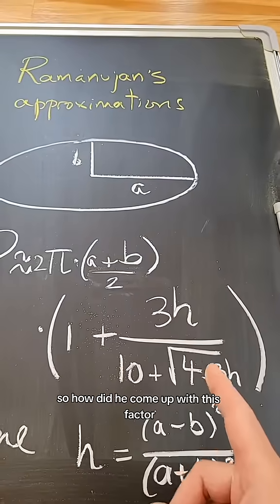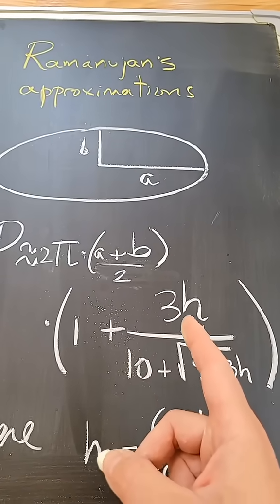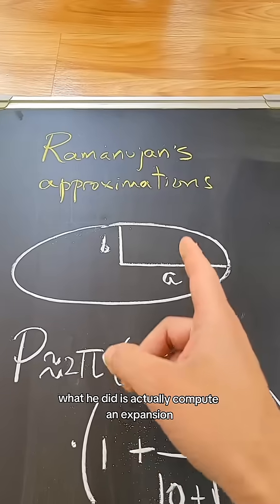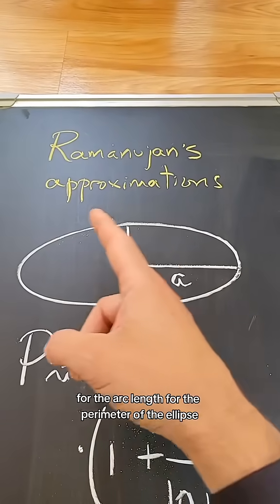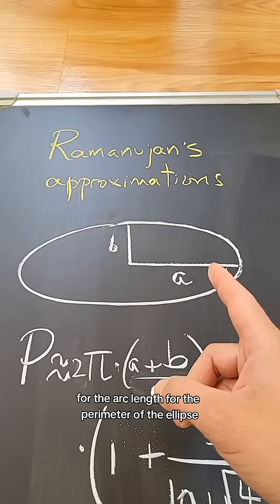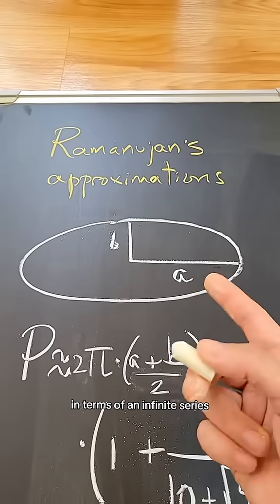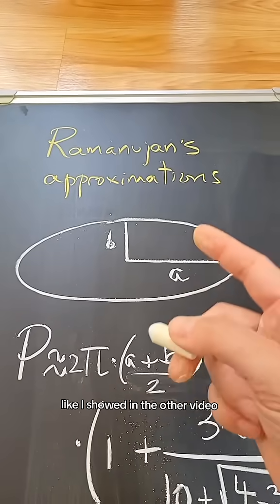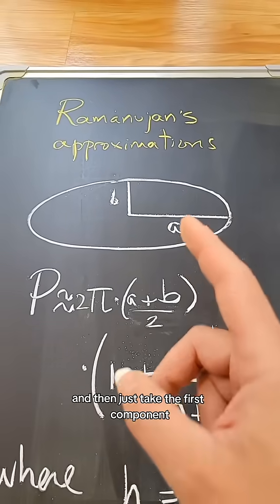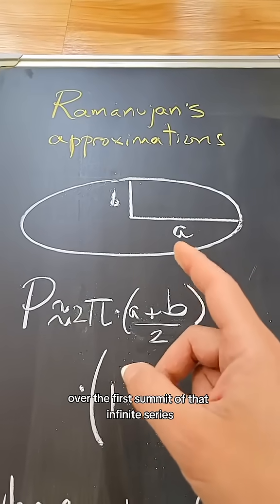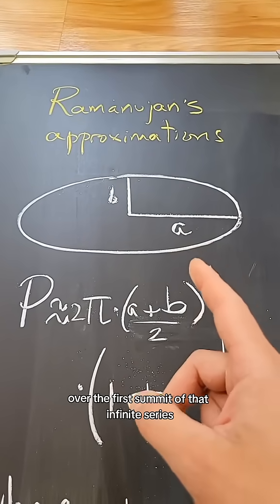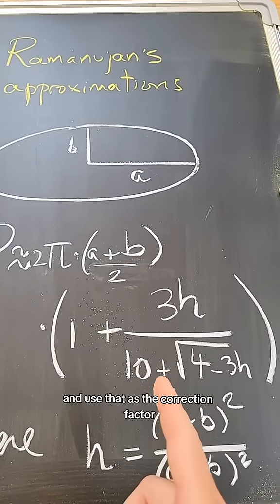So how did he come up with this factor? What he did was actually compute a series expansion for the arc length, for the perimeter of the ellipse, in terms of an infinite series, like I showed in the other video. Then just take the first component of that infinite series and use that as the correction factor.